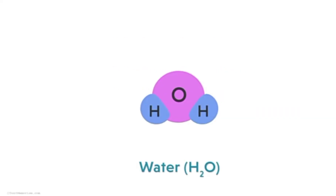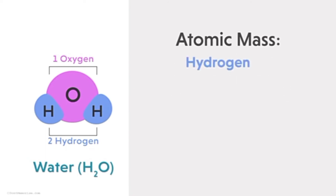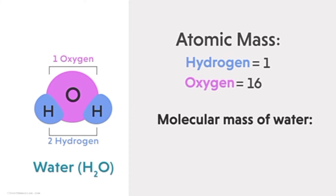If we take the molecule of water, it has two hydrogen atoms and one oxygen atom. They combine together to form a molecule. The atomic mass of hydrogen is 1 and the atomic mass of oxygen is 16.